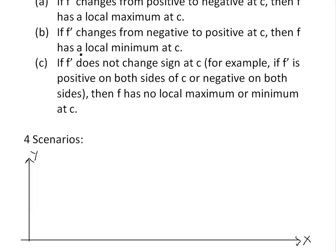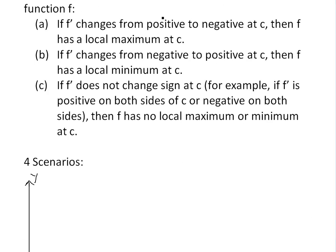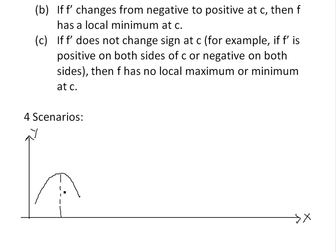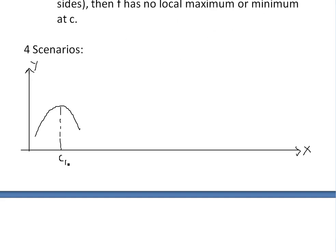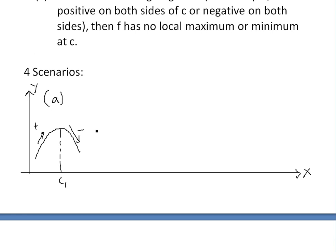To help remember this first derivative test, there are four scenarios. The first one is if f prime changes from positive to negative — based on the increasing/decreasing test, you're increasing while it's positive, and then once it hits the critical number, the derivative is zero, and then it goes negative going downward. So at this point c1, the derivative is positive to the left of c, then changes to negative, meaning it's going downward. This is case A — a local maximum.